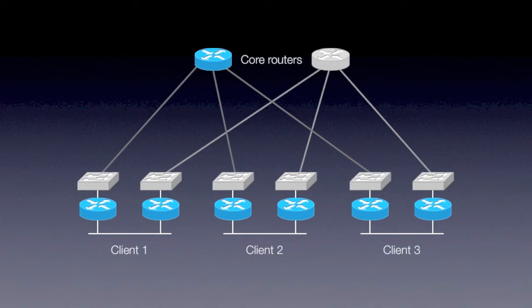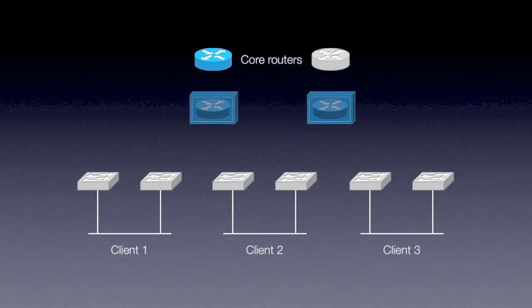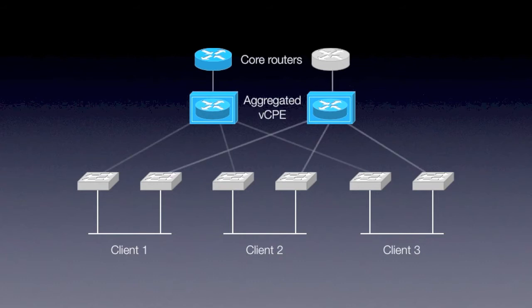What we have at the moment is we usually put two routers on each site, one primary and one for backup, and then two switches as well, again primary and backup, because we'd like to provide layer two services as well as layer three. And what we would like to be able to do is take those routers off the site and aggregate them in some way closer to our core, and we thought we might be able to solve this with virtualization.